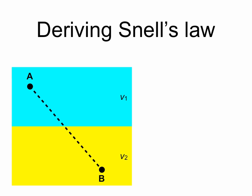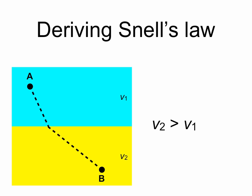You might think that if light is traveling from A to B, then the fastest path would be a direct line between them. But it turns out that if v1 is bigger than v2, so light is traveling faster through the blue material, it makes sense for most of the path to be in the blue region where light is traveling faster — that will minimize the time. And if v2 is bigger than v1, then most of the path should be in the yellow region, where light travels faster.